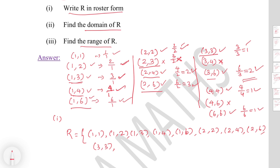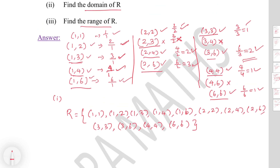With a = 6: (6,6) since 6/6 = 1 is valid. So R in roster form is: {(1,1), (1,2), (1,3), (1,4), (1,6), (2,2), (2,4), (2,6), (3,3), (3,6), (4,4), (6,6)}. The domain of R is the set of all first elements: {1, 2, 3, 4, 6}.